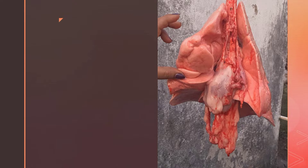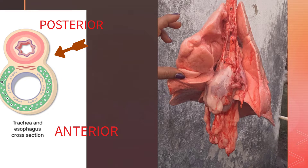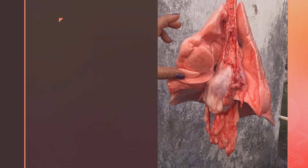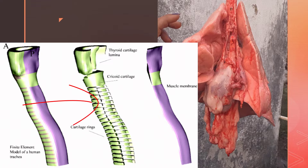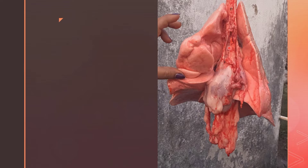Just understand that the trachea lies anteriorly, whereas the esophagus passes downward in the body, just posterior to the trachea. In humans, the trachea is formed by incomplete C-shaped rings of cartilage, and that incomplete part is filled by a muscle called the trachealis muscle.